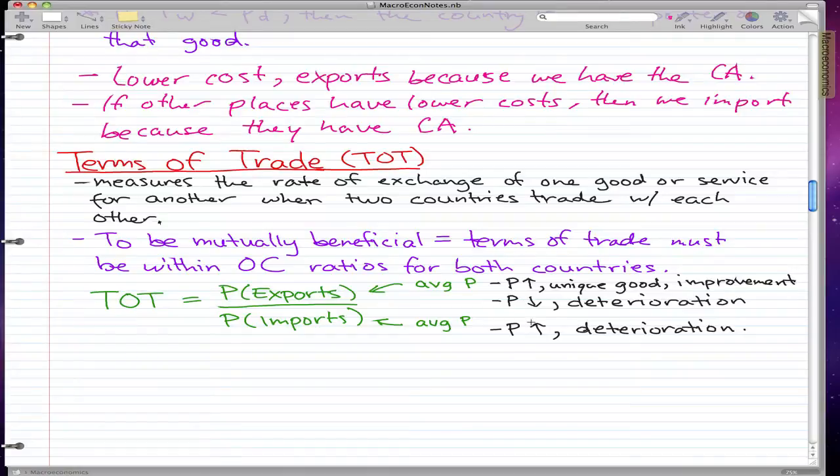If the price goes down, then there's a deterioration. With our same example, if the price of bananas goes down, then we might have to give three bananas for five apples.